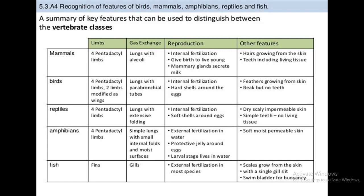We will discuss now the characteristic features of all these classes. If you look at the evolutionary tree, fishes appeared first, then amphibians, then reptiles, then birds, and mammals. Mammals are the most evolved class of vertebrates, whereas Pisces is the least evolved class. We will see the comparative features of all five classes.